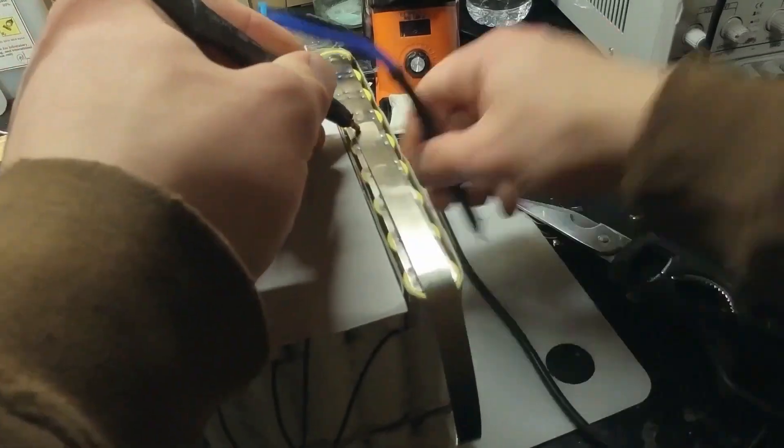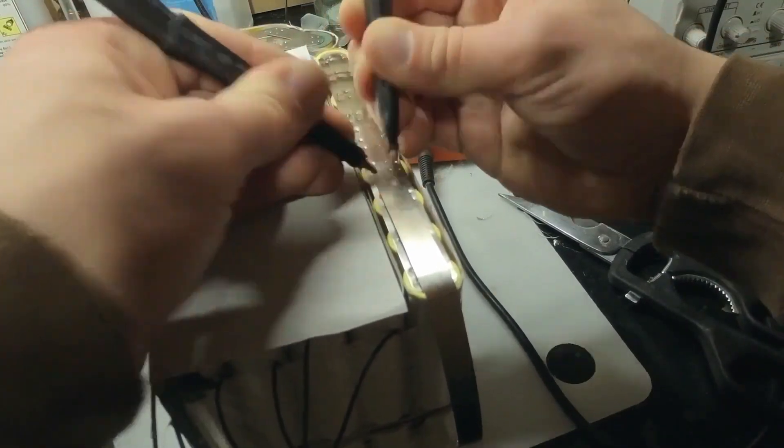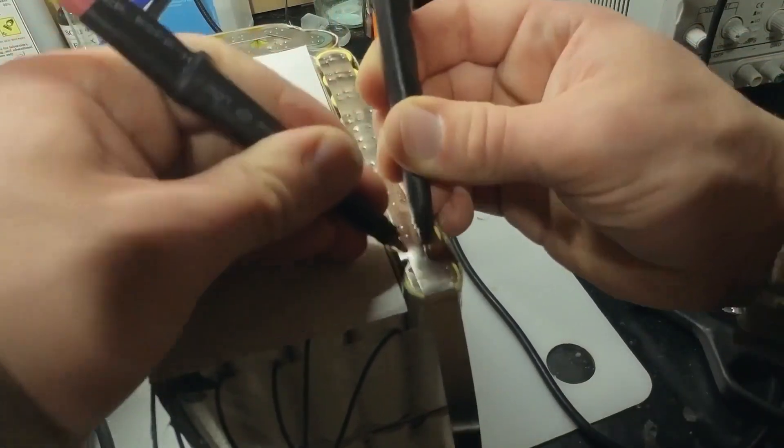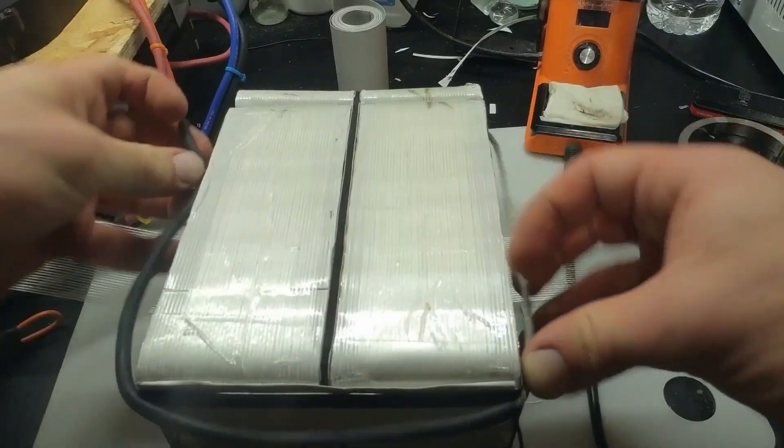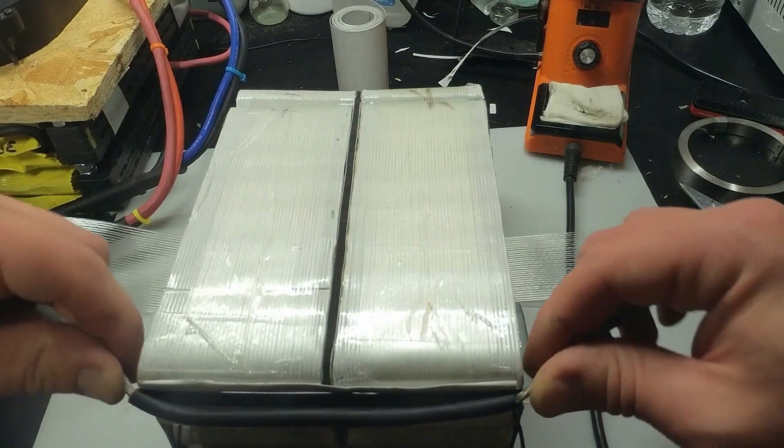This is where I welded a strip of nickel for the series connections between the two 6S packs, giving a flat spot to solder copper wire to carry the main supply of power, since the nickel is only ready for 14 to 20 amps maximum, and this pack will be delivering close to quadruple that at some times.